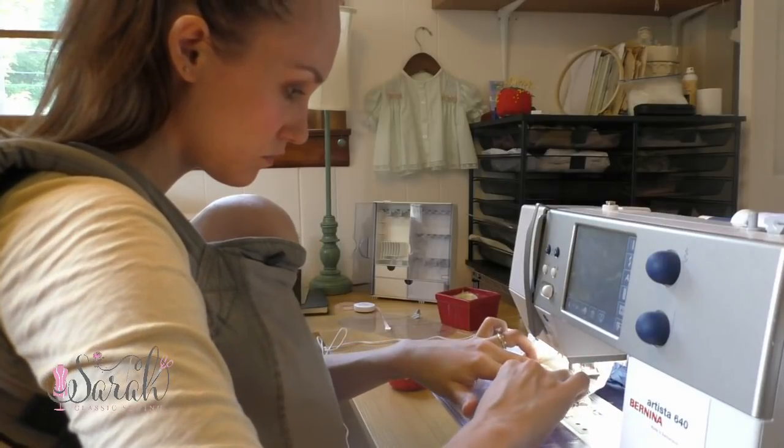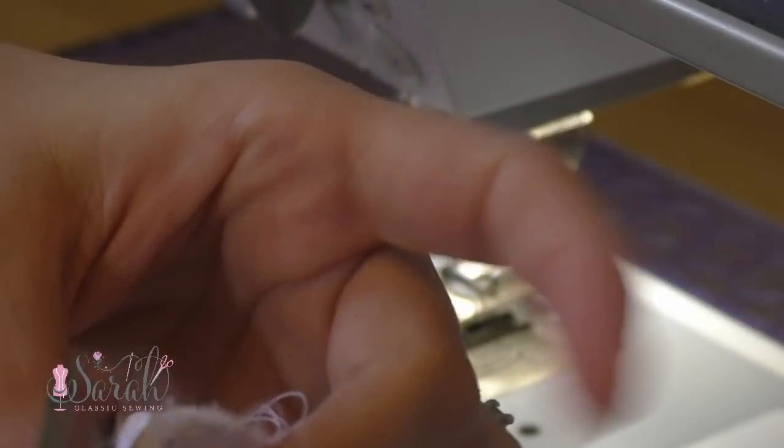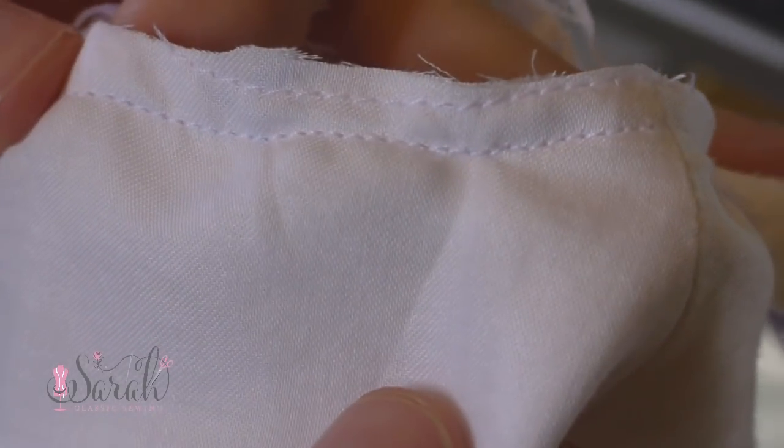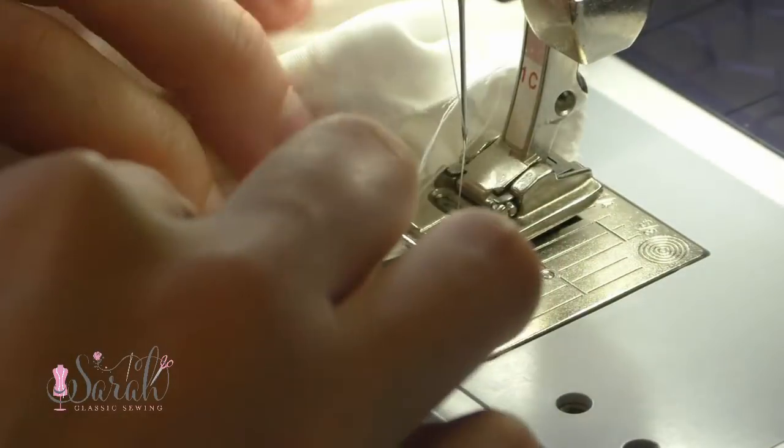And after I'm done sewing that sleeve to the shirt, then I trim up that seam and take it back to my machine and run a zigzag to enclose those raw edges.